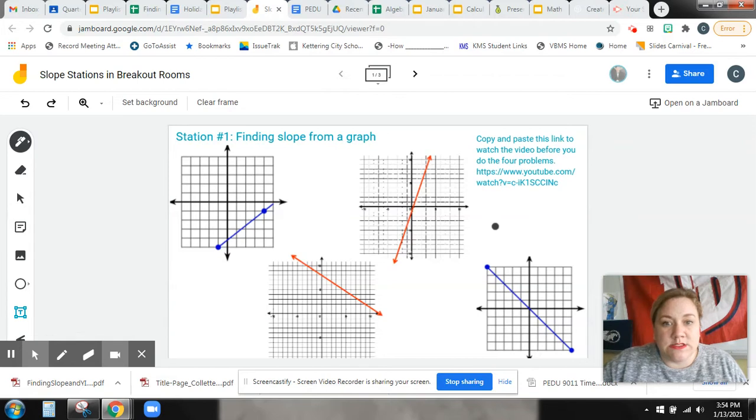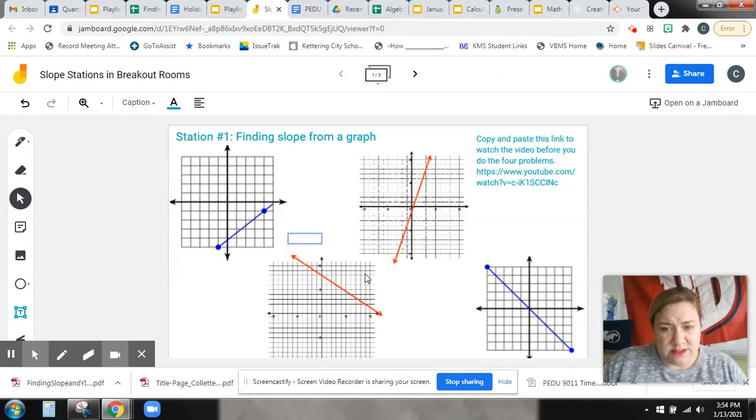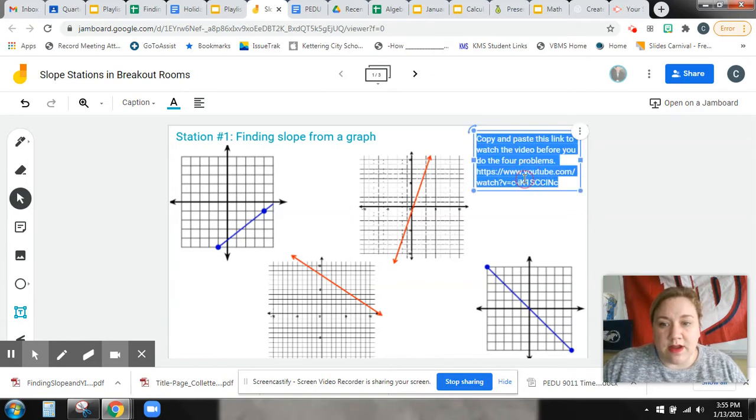So the first one, station one, this is right here. Station one, finding slope from a graph. You're going to either write the slope or take a text box and enter the slope for one, two, three, and four. Yours hopefully don't look this pixelated. The graphics are so pixelated on mine. Mr. Snyder's look totally fine and Mr. Cridges look totally fine. So I'm hoping it's something to do with my computer.